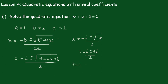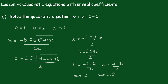So x is equal to minus i plus 3i over 2, or x equals minus i minus 3i over 2. So x is equal to 2i over 2, which is i, or x is equal to minus 4i over 2, which is minus 2i.